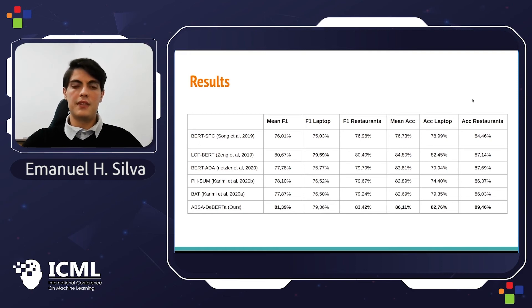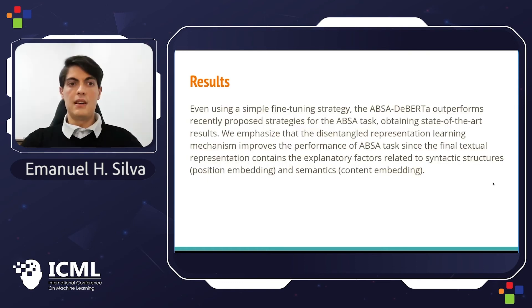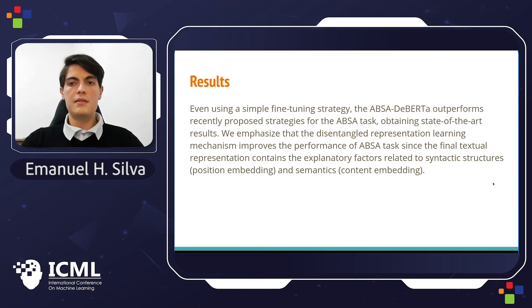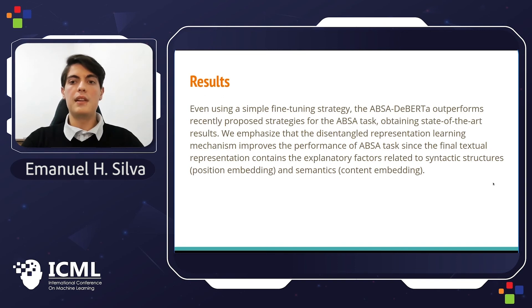As we can see from our results table, ABSA-BERT provides good results when compared to other state-of-the-art methods. Even using a simple fine-tuning strategy, the model outperforms recently proposed strategies for the ABSA task, obtaining state-of-the-art results. We emphasize that the disentangled representation learning mechanism improves performance, since the final text representation contains the explanatory factors related to syntactic structures — the position embedding — and semantics — the content embedding.